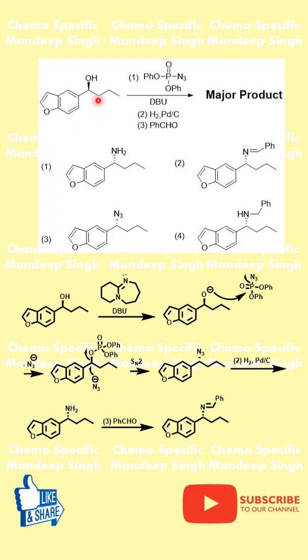Let's review this multi-step problem in which a secondary alcohol undergoes reaction with phosphonyl azide in the presence of base DBU, followed by hydrogenation and then reaction with benzaldehyde.